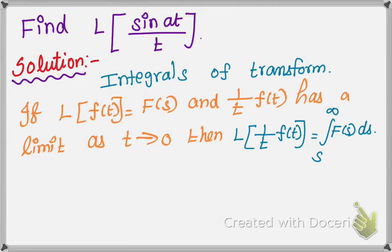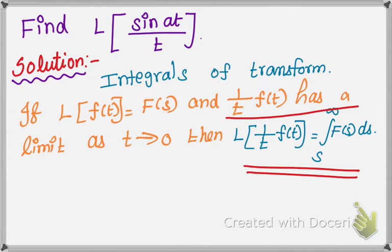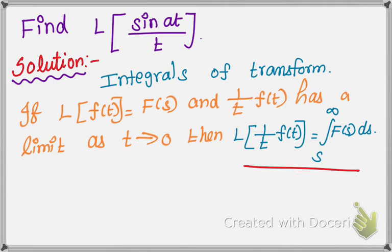Before we apply this formula, we have to check the limit. We check whether 1/t · f(t) has a limit as t tends to 0 — that is, whether the limit exists or not. We check it using L'Hôpital's rule. If it exists, we continue the problem; otherwise, we stop and cannot find the Laplace transform.